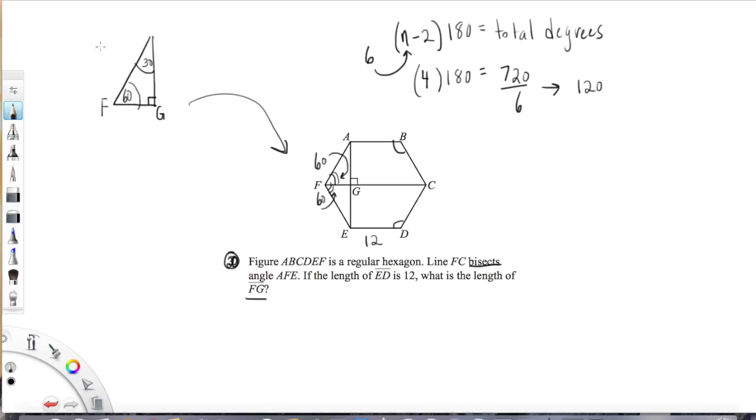30-60-90s oftentimes are what these geometry questions boil down to. The other one is the 45-45-90, but let's talk about this one. The ratio of sides of 30-60-90 are always the same: the short side is x or we'll call it x, the long side is x root 3, and then the hypotenuse is 2x.